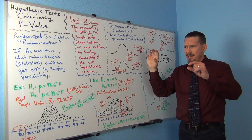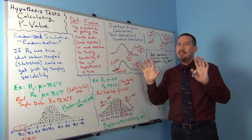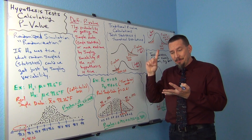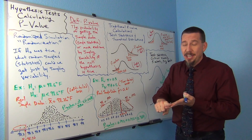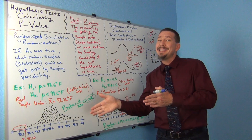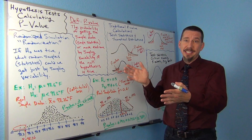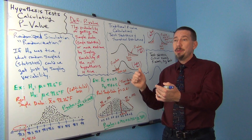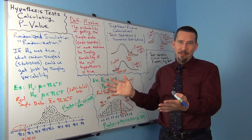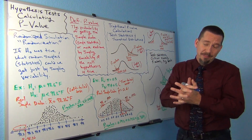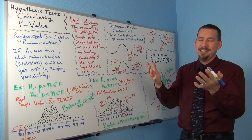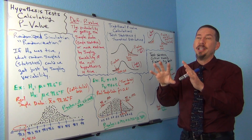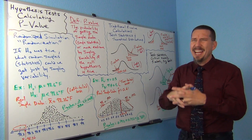Let's get into how all of this relates together. We have four key things we've been looking at: test statistics, critical values, p-value, and significance levels. We've already said that we compare the test statistic to the critical value, and the test statistic would have to fall in the tail to be significant. Then we compare the p-value to the significance level, and the p-value would have to be lower than the significance level for us to be significant and for it to be unlikely to be sampling variability.